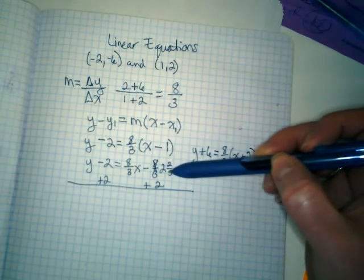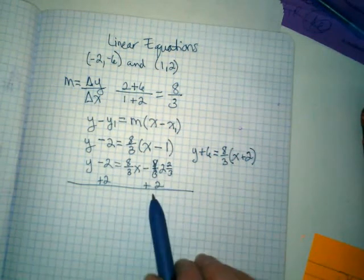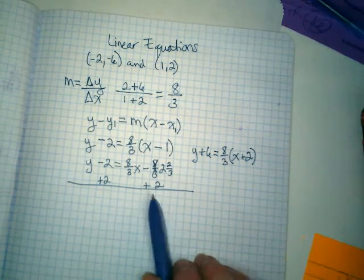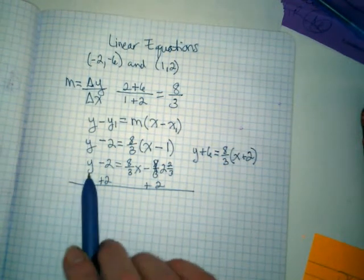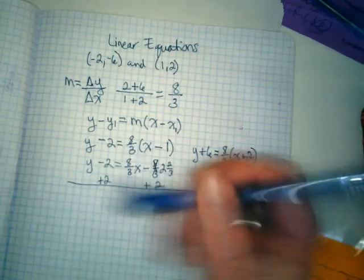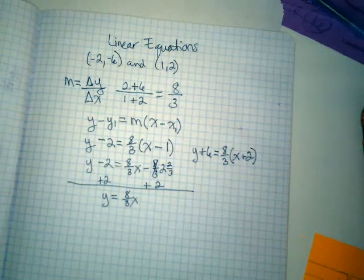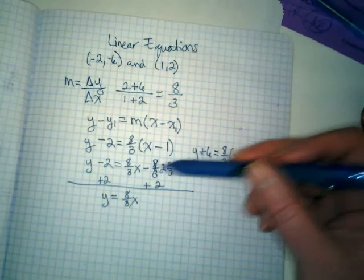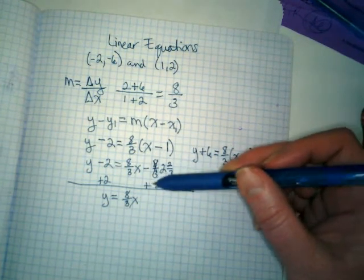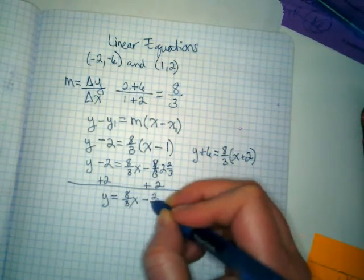So I've crossed this out and rewritten it as 2 and 2 thirds. It's a negative 2 and 2 thirds. It's having a positive 2 be added to it. So I'm going to rewrite this equation from left to right. Y minus 2 plus 2 is going to give me just Y. Equals 8 thirds X. Why am I not adding the 2 to the 8 thirds X? Because they're not like terms. And then I've got a number here. Negative 2 and 2 thirds plus 2 is going to give me just negative 2 thirds.